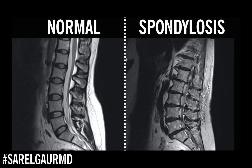Here I have two MR images of the lumbar spine in the sagittal plane. This is a normal spine on the left, and this is a spine with spondylosis on the right. Starting with the vertebral bodies — in between them are discs, which allow flexibility in your spine. These discs are juicy, meaning they have internal fluid, evidenced by this high signal or white signal centrally. That means this person will have flexibility when they flex, extend, or bend.